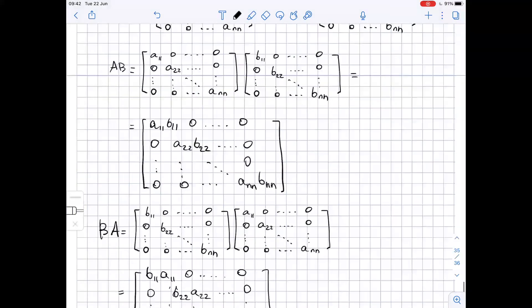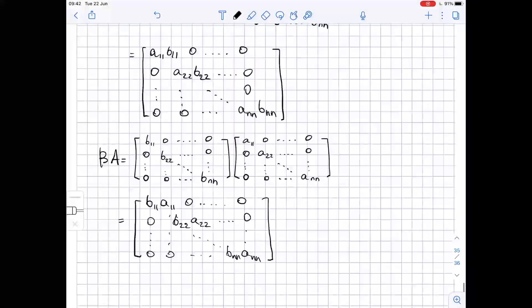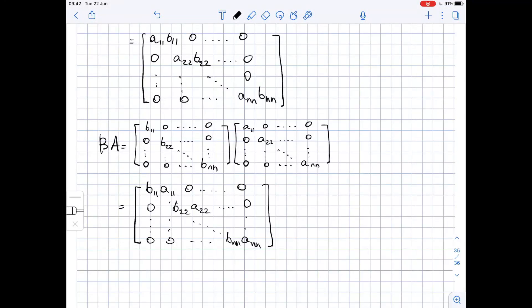So now if you look at what we got, if you look at the entries of AB and the entries of BA, you will see that they are the same. So AB equals BA.